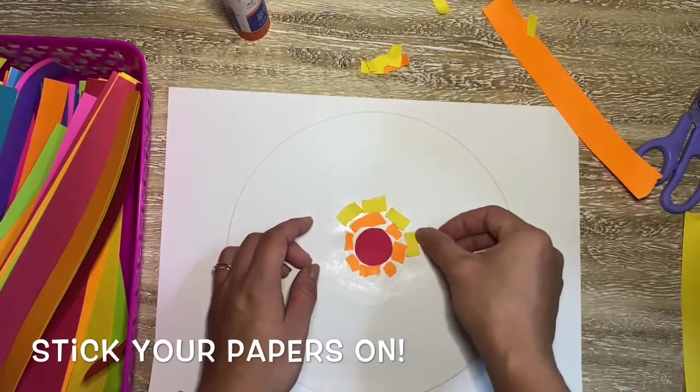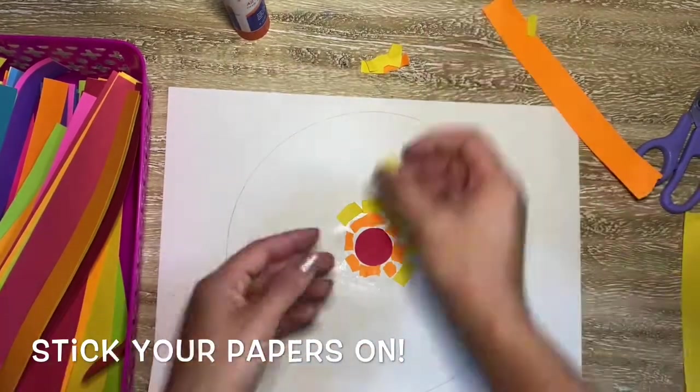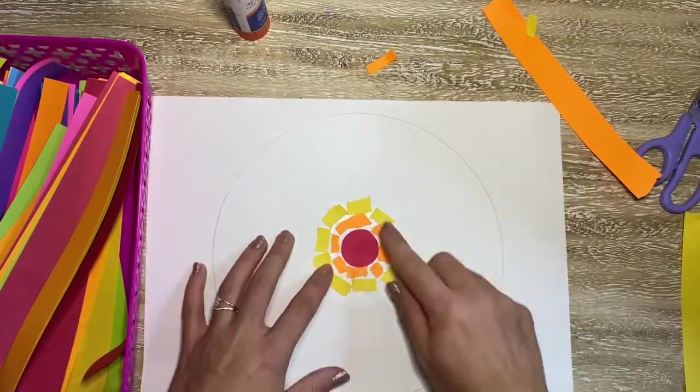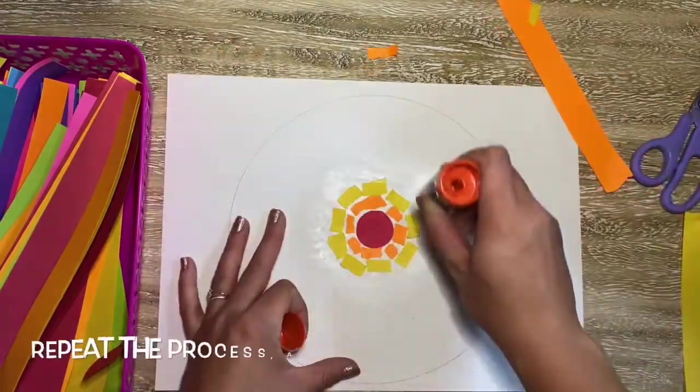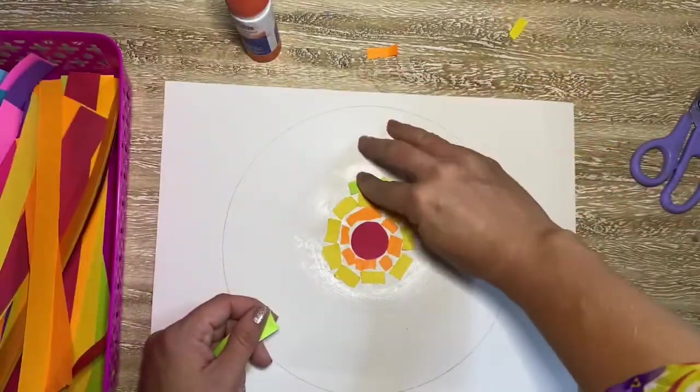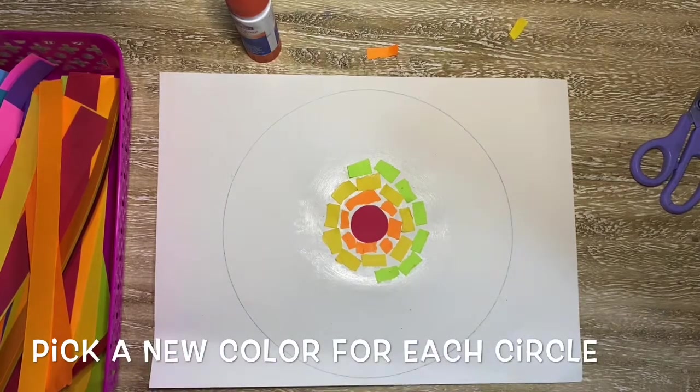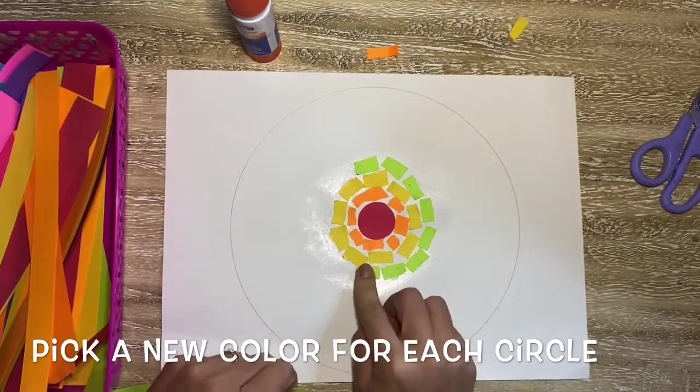Now notice when I stick it down I'm making sure that I complete my full circle with one color before I switch to the next. I'm also making sure I leave a little tiny gap of white space. I'm leaving a little tiny bit of white space in between so that you can tell that these are all separate rectangular pieces of paper that I tore.